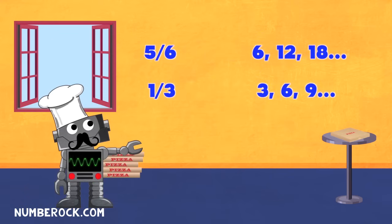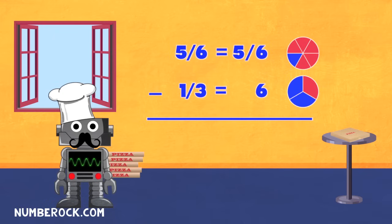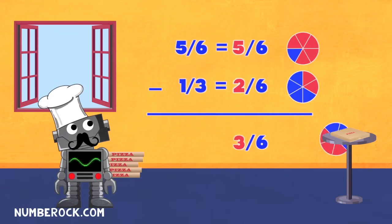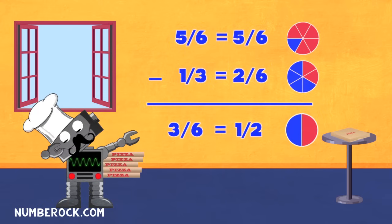Find the least common multiple, that's the first action. Next is finding equivalent fractions. Then do the addition or subtraction. Simplify like an automatic reaction.